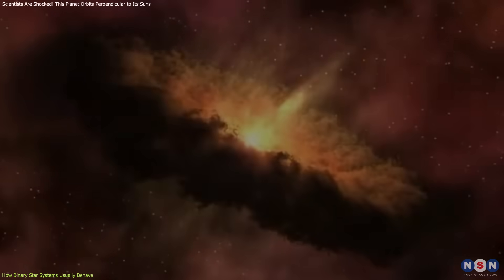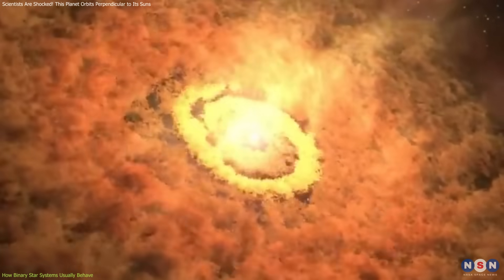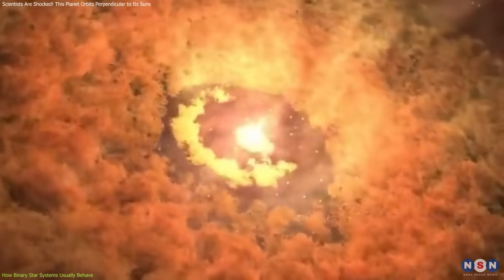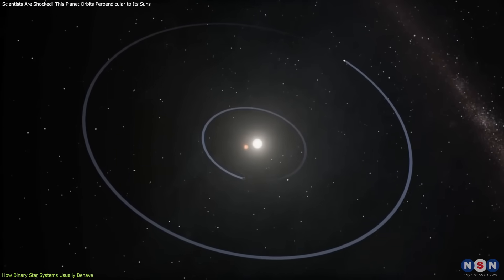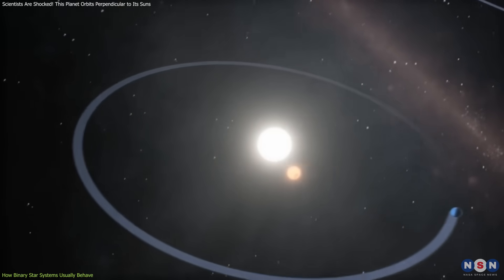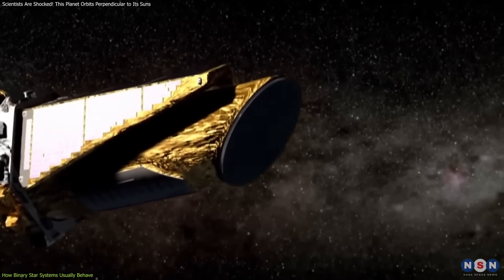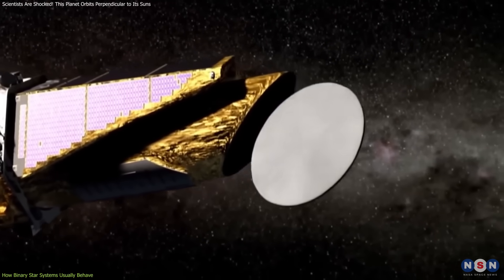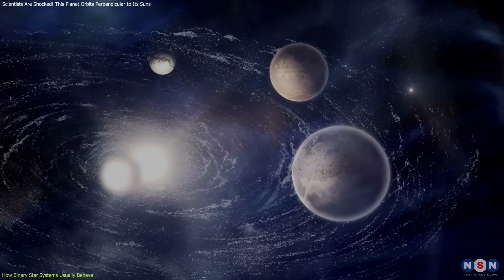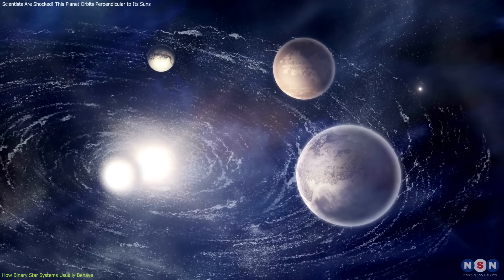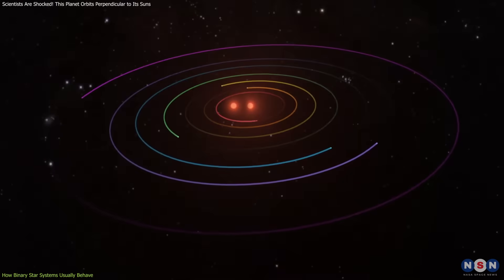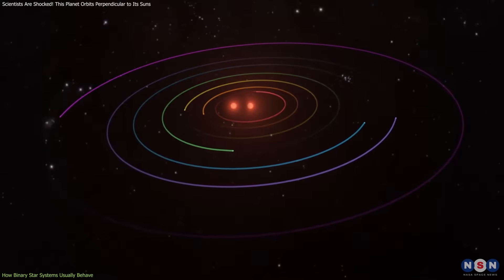Typically, planets in binary systems form from a shared disk of gas and dust that surrounds both stars. Because of this shared origin, their orbits usually align closely with the orbital plane of the stars themselves. The Kepler mission, launched by NASA in 2009, revealed several such binary systems, showing that stable planetary orbits are possible, but mostly if the planet's path is in the same general plane as its star's orbital motion.